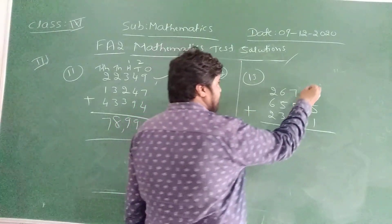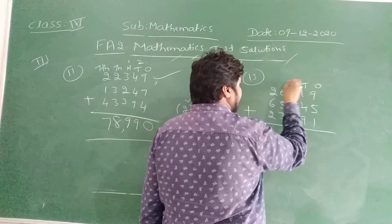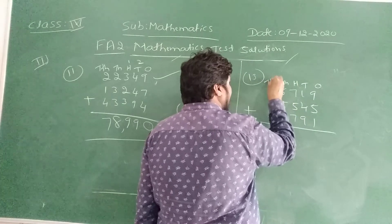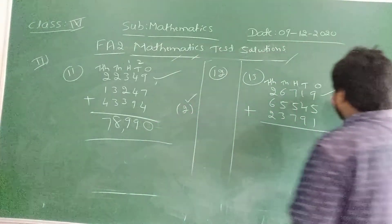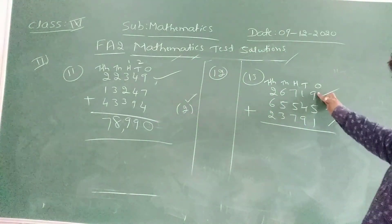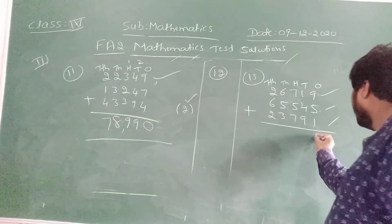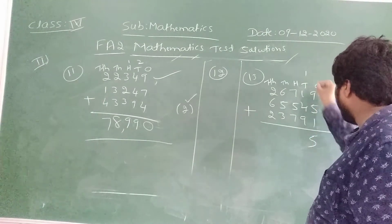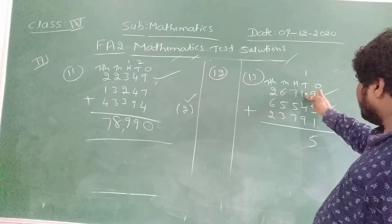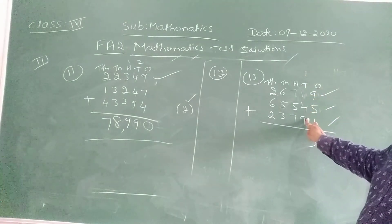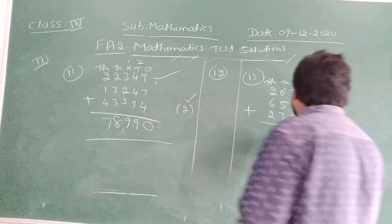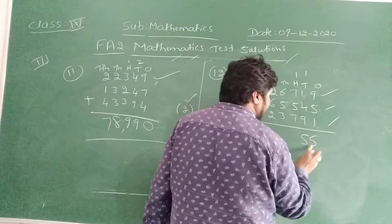Going to add the ones. 9 plus 5, 14. 14 plus 1, 15. 5, write as is, carry 1. 1 plus 4 is 5. 5 plus 9 is 14. 14 plus 7 is 21. 1, write as is, carry 2.